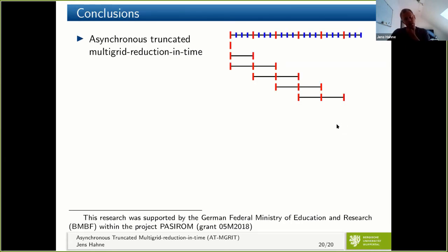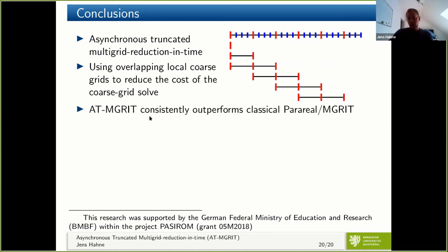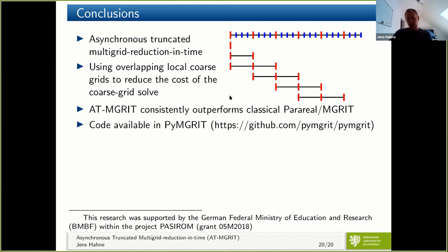To summarize: the new ATM-Grid algorithm changes the coarse-level structure by replacing one global grid with multiple overlapping local coarse grids that can be solved in parallel, reducing the serial workload and enabling more parallelism in time. ATM-Grid consistently outperforms classical parareal and M-Grid. All existing adaptations of parareal and M-Grid are assumed to also be applicable to ATM-Grid, since only the coarse-level structure has been changed. The code is available in the pyMGrid Python package, and a preprint with full details and theoretical analysis is also available. Thank you.